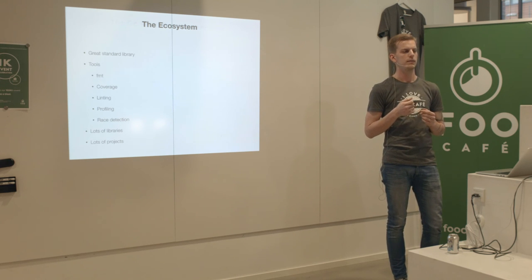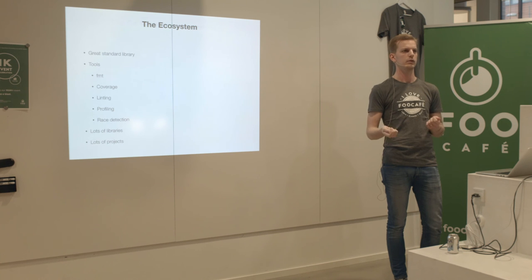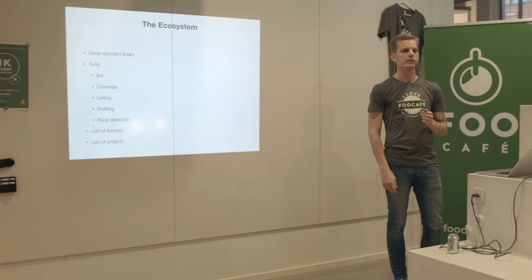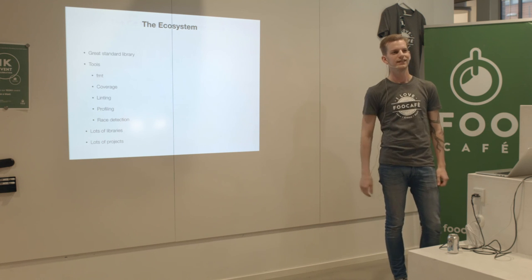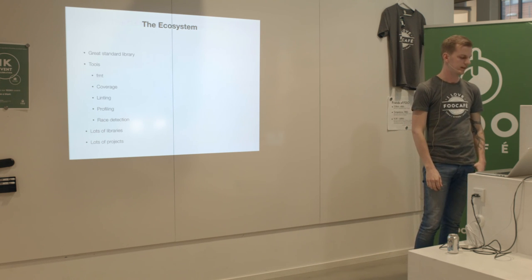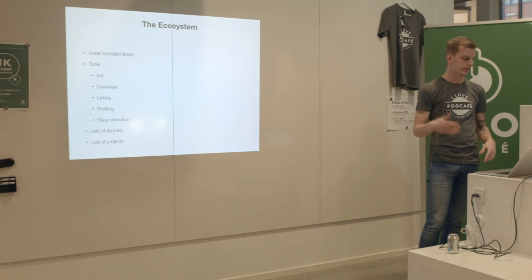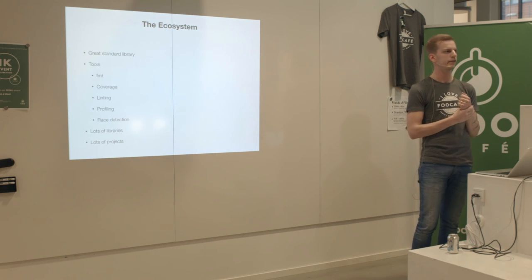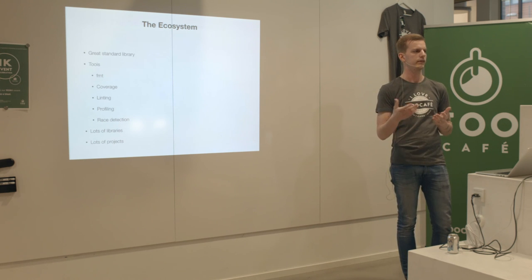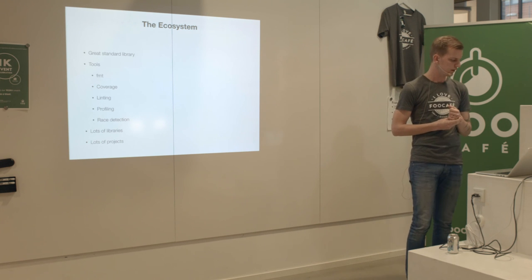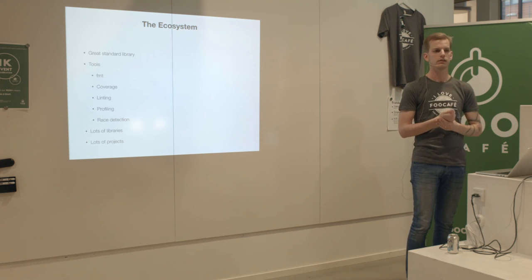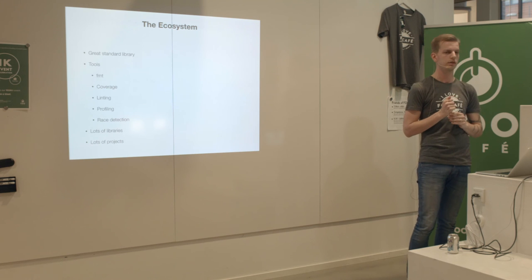There's this format tool - gofmt - and it's convention to always run it on your source code when you save. So basically everyone has the same formatting; no arguing about tabs or spaces. There's also coverage, linting, profiling, and a race detector that helps detect data races in concurrent code. Notable projects built in Go include Docker, Kubernetes, etcd, fleet, and InfluxDB.